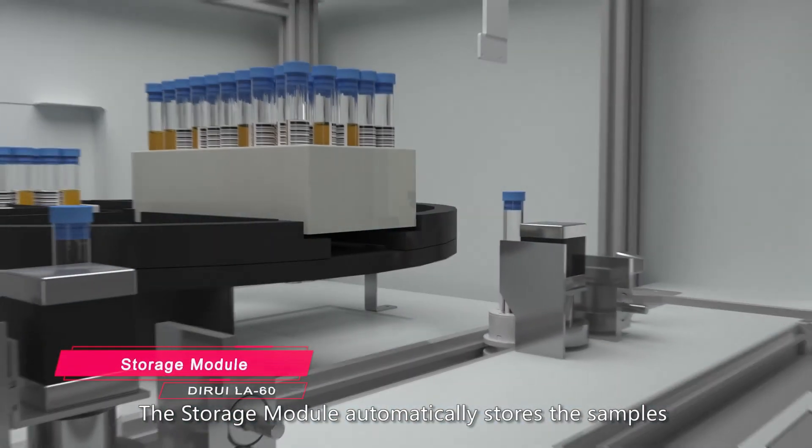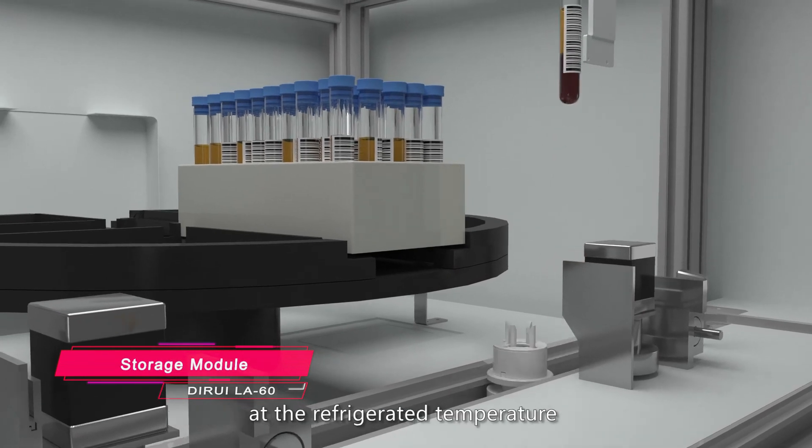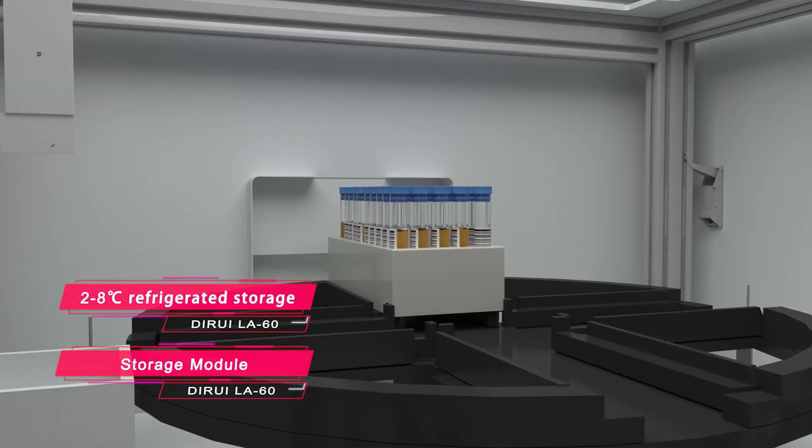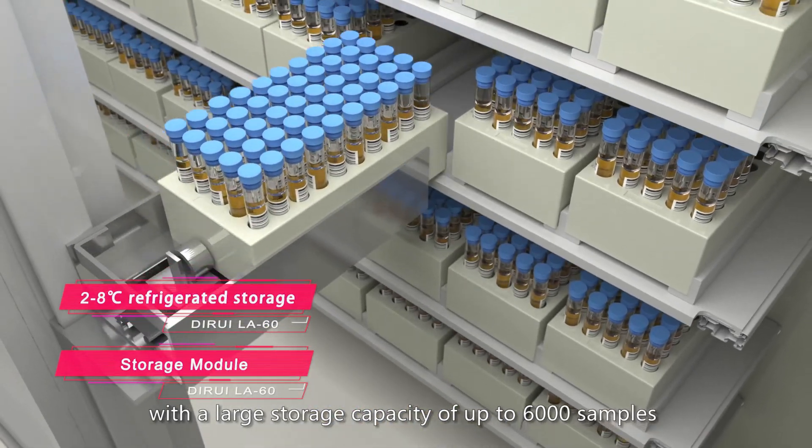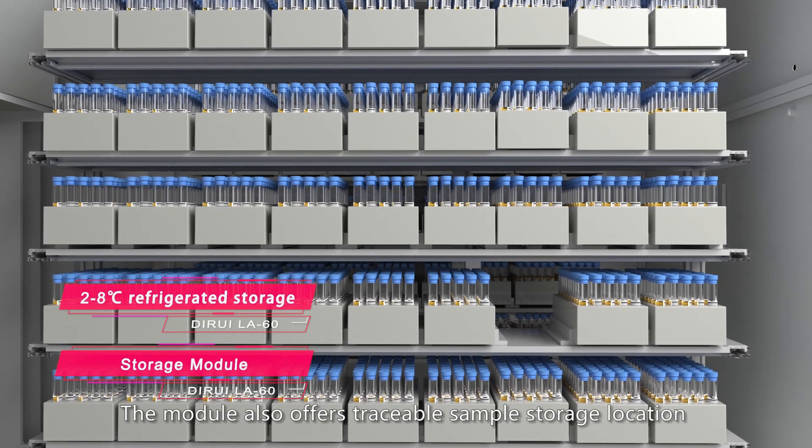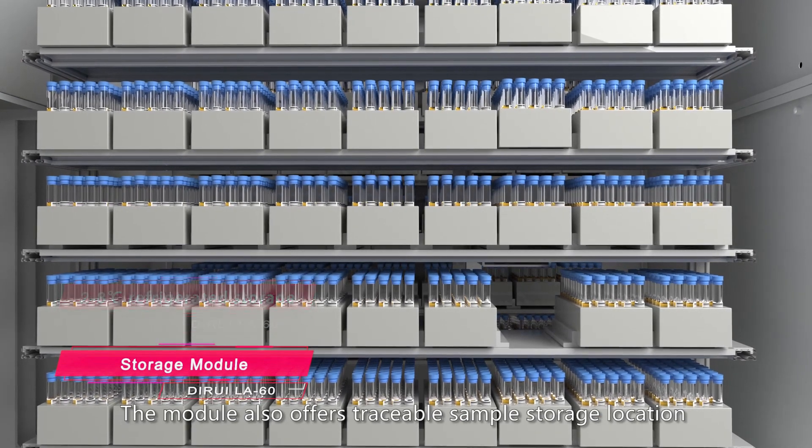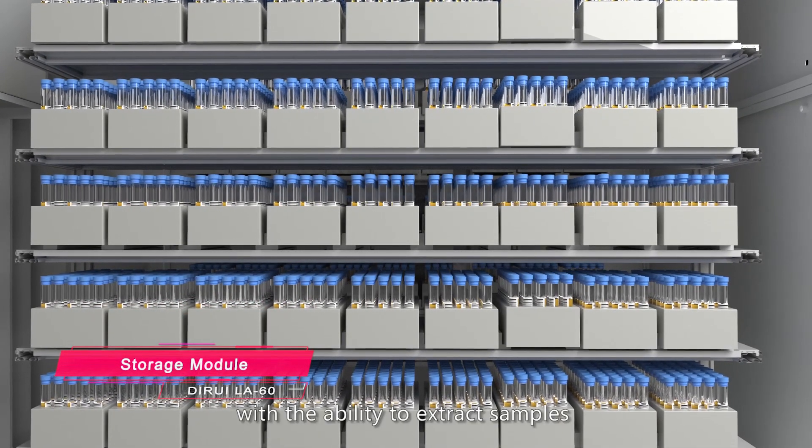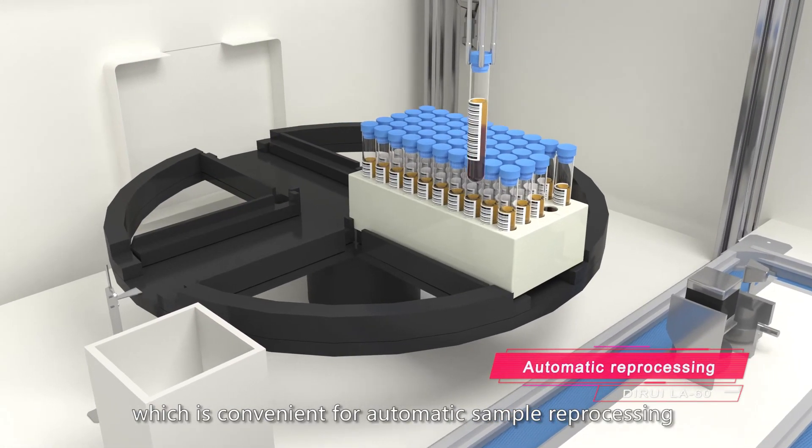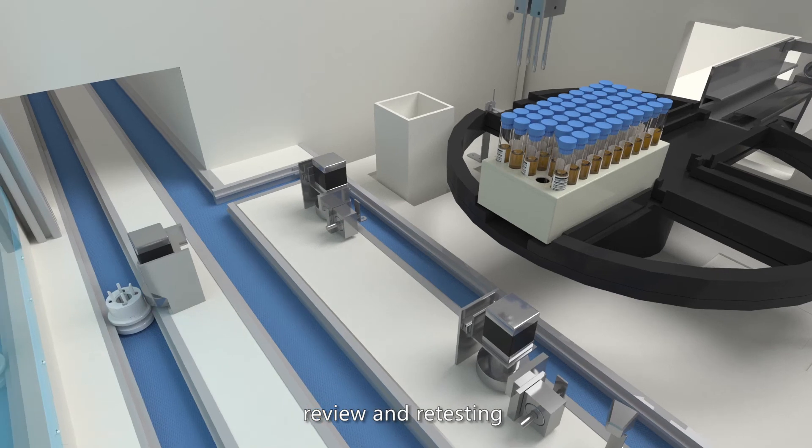The storage module automatically stores samples at refrigerated temperature of 2 to 8 degrees centigrade, with large storage capacity of up to 6,000 samples. The module also offers traceable sample storage location, with the ability to extract samples, which is convenient for automatic sample reprocessing, review, and retesting.